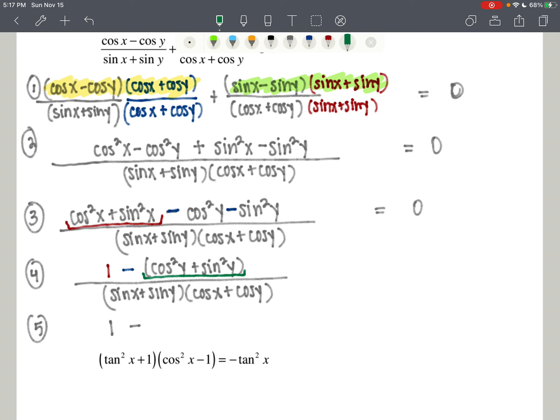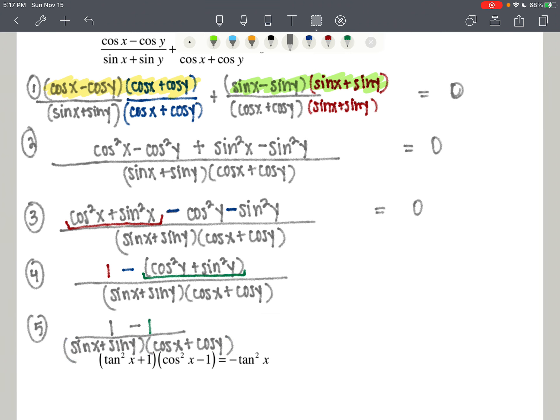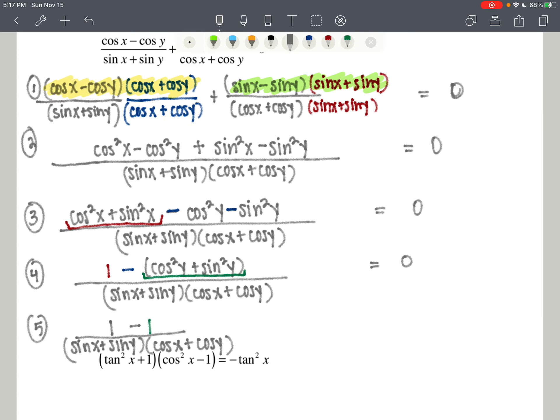So step five, we're going to have one minus one all over that denominator, which is equal to zero.